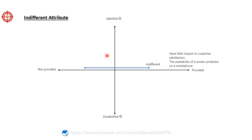Indifferent attributes have little impact on customer satisfaction. Customers are neither satisfied nor dissatisfied when these attributes are present or absent. They are usually basic features that customers don't pay much attention to or have neutral feelings about. For example, an indifferent attribute for a smartphone could be the availability of a screen protector. Customers may have neutral feelings about whether a screen protector is included or not, as it is a relatively common and easily accessible accessory.